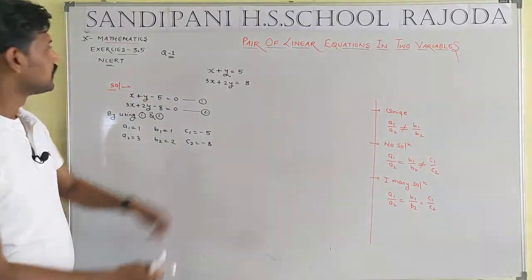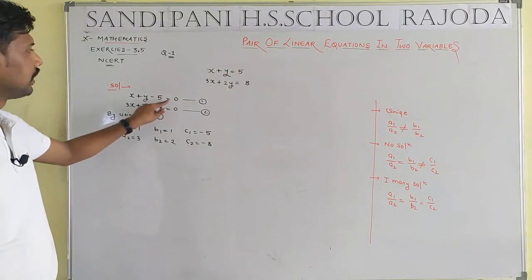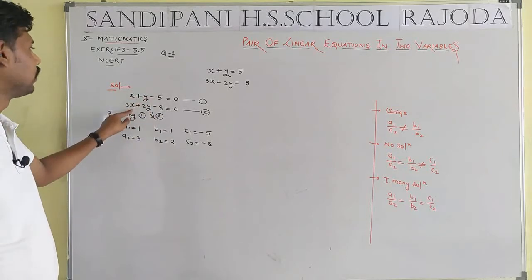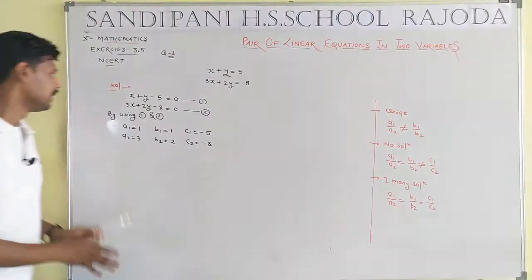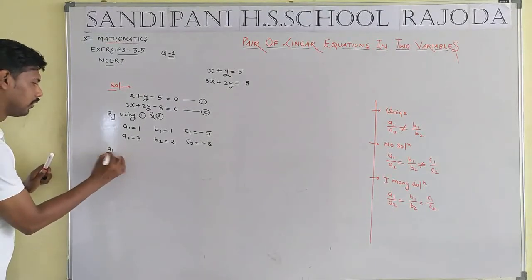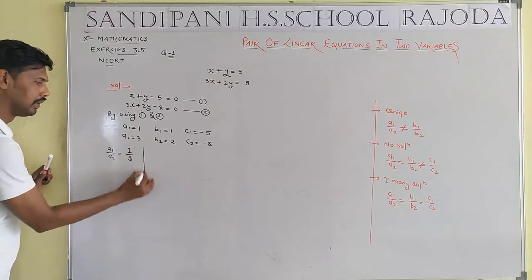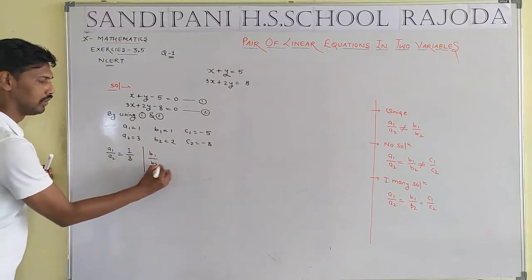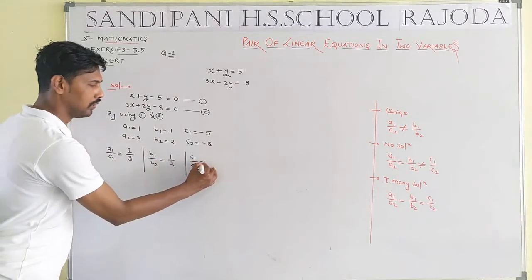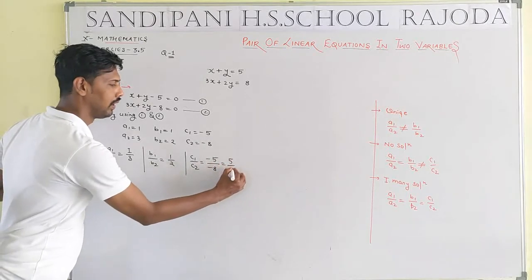After finding a1, b1, c1, a2, b2, c2, we find: a1/a2 equals 1/3, b1/b2 equals 1/2, and c1/c2 equals minus 5 by minus 8 equals 5/8. Comparing the first and second ratios: 1/3 is not equal to 1/2, so this confirms a unique solution.